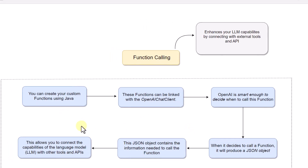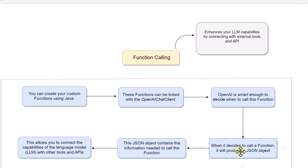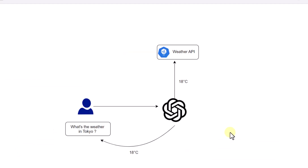There are certain steps involved to achieve function calling. First, we have to create our custom functions and register them. Because we are using an OpenAI model, we leverage the OpenAI chat client and pass our function name. Based on the user query, OpenAI is smart enough to decide when to call the functions, producing a JSON object with arguments we can use to call the functions and connect our LLM models to external tools and APIs.